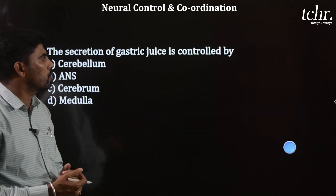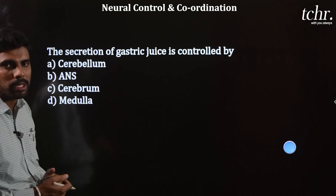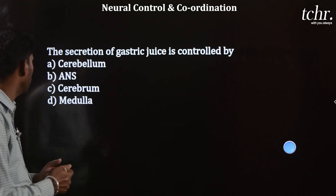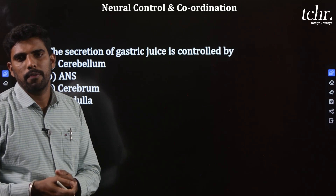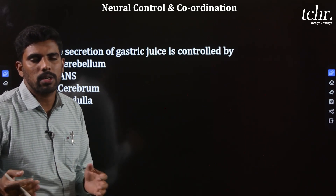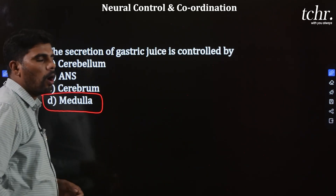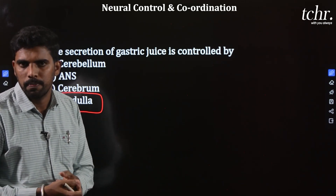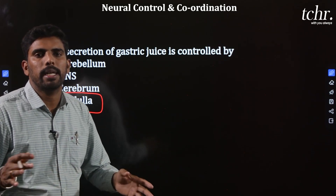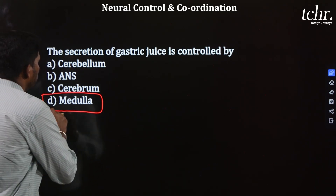Question 3: The secretion of gastric juice is controlled by — Option A: cerebrum; Option B: ANS (Autonomic Nervous System); Option C: cerebrum; Option D: medulla. The secretion of gastric juice in the stomach is controlled by the medulla oblongata. That region also controls vomiting sensation and respiratory rhythmic centers. Almost all vital functions are controlled by the medulla oblongata.